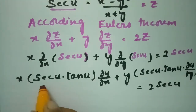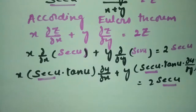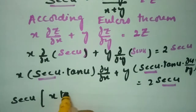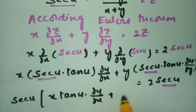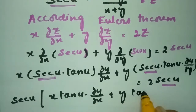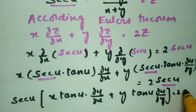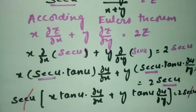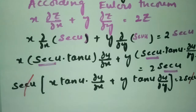Taking secant u common and cancelling, we get: x into tan u into ∂u/∂x plus y into tan u into ∂u/∂y equals 2 secant u. After cancelling secant u on both sides, I take tan u common.